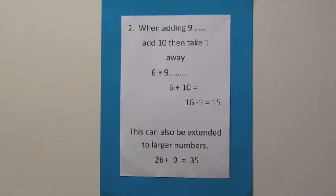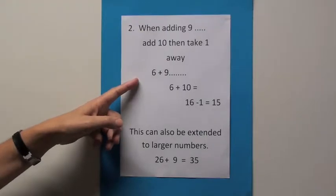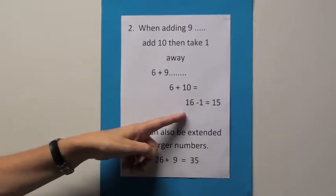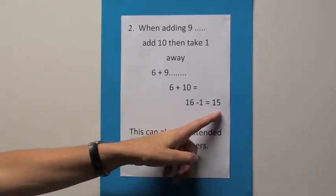If we look at this second strategy, when adding 9, it's very easy to mentally add on 10 and then take one away. As in this example, 6 plus 9. We can easily add 10 onto 6 and know that the answer is 16 and then just take one away to get the final total of 15.